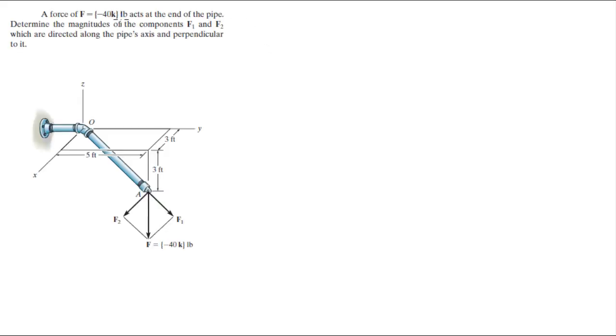Alright guys, now we're going to do this very easy problem. It says the force F with the vector of negative 40k acts at the end of the pipe. Determine the magnitudes of F1 and F2 which are along the pipe and perpendicular to it.